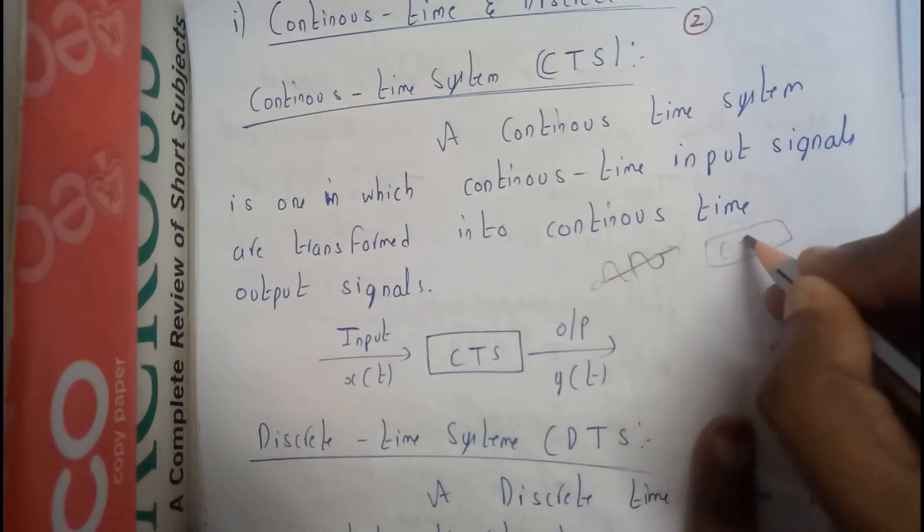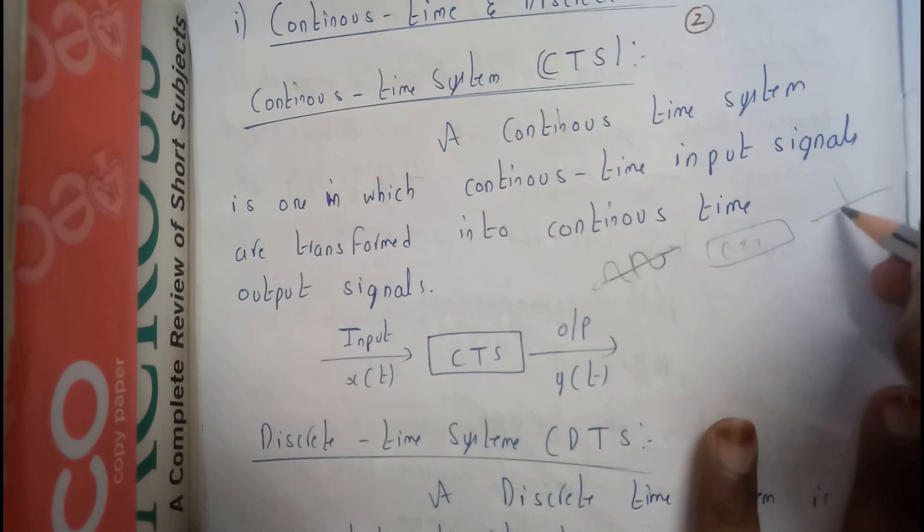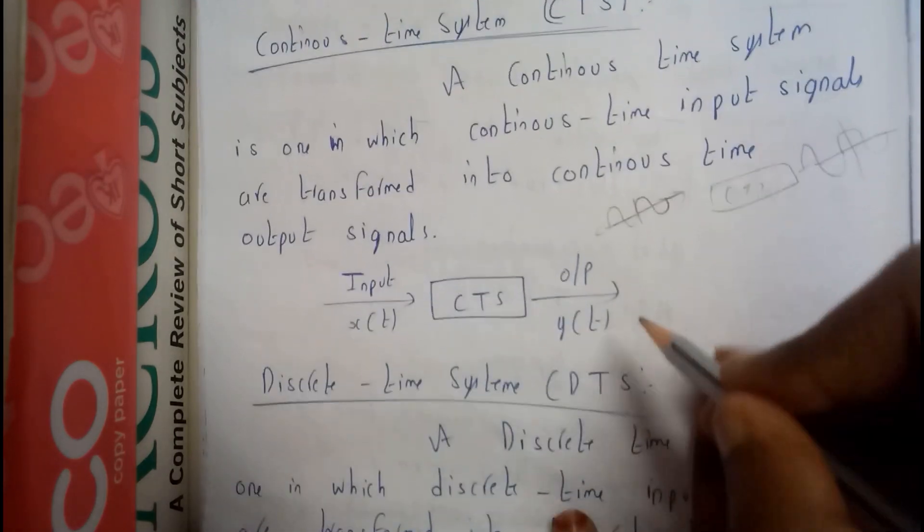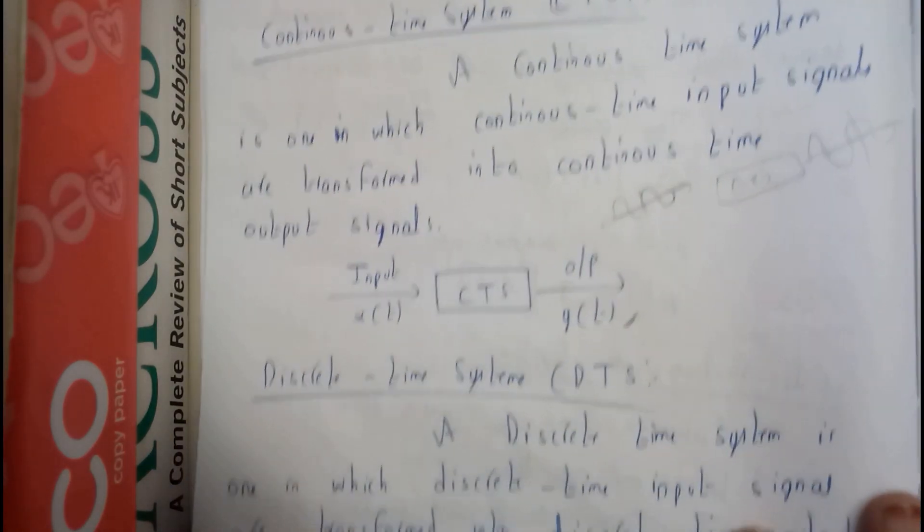If we pass it to a CTS, that is continuous time system, we gonna get another continuous time system. It may be starting like this also. There may be a situation even like that. That is what we call the continuous time system.